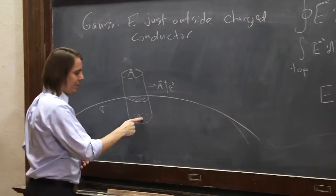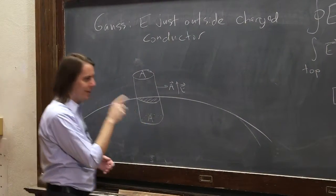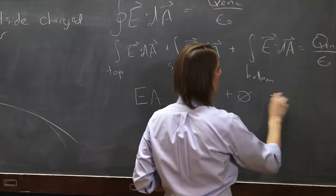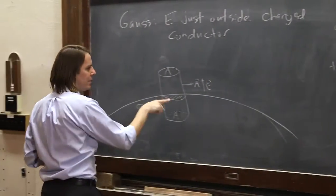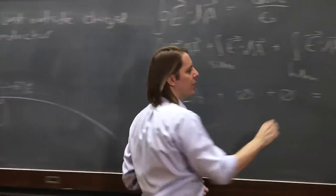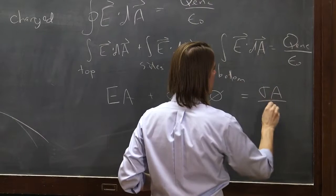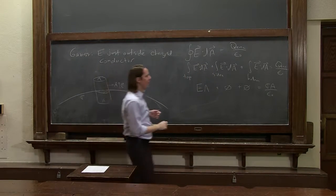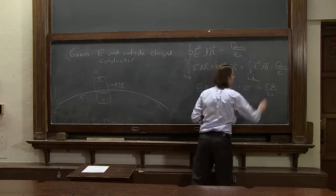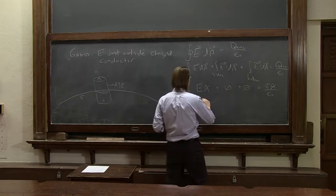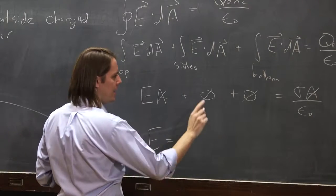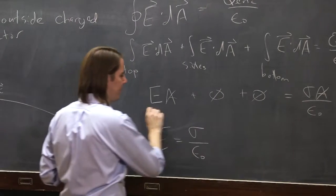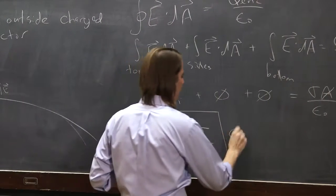And at the bottom, it's zero, because the E field inside of metal at equilibrium is always zero. The charge enclosed is just sigma times the area, sigma A over epsilon naught. So in the end, you get that the E field of a charged metal does not depend on the area of your Gaussian cylinder. It's just that E equals sigma over epsilon naught for a charged metal.